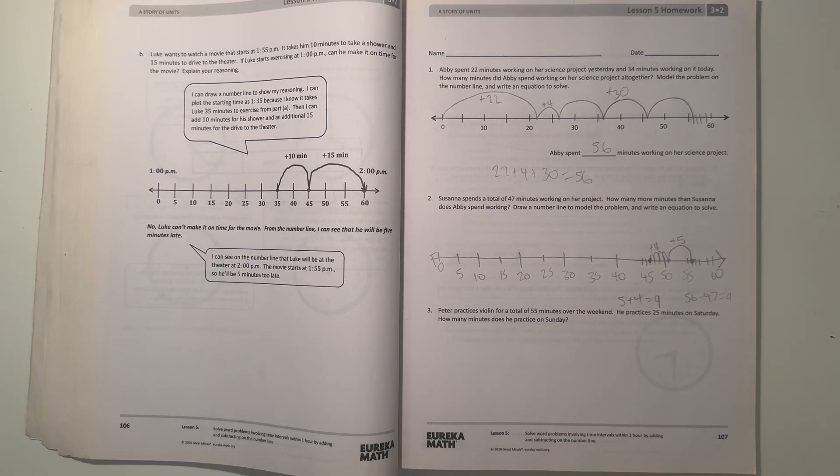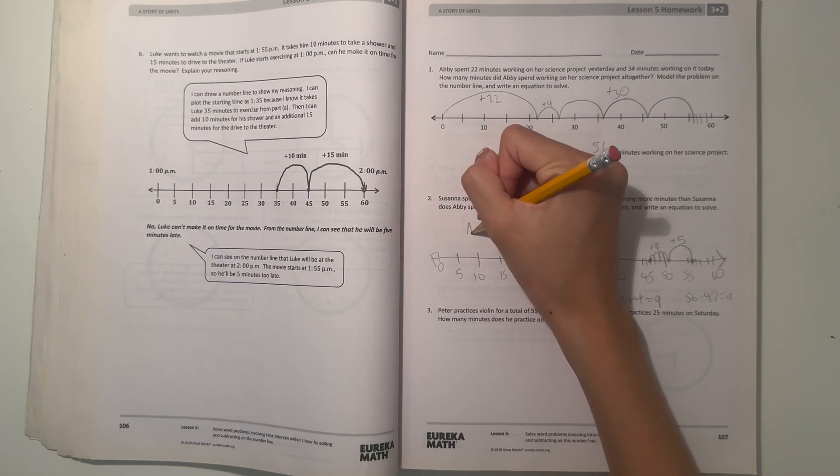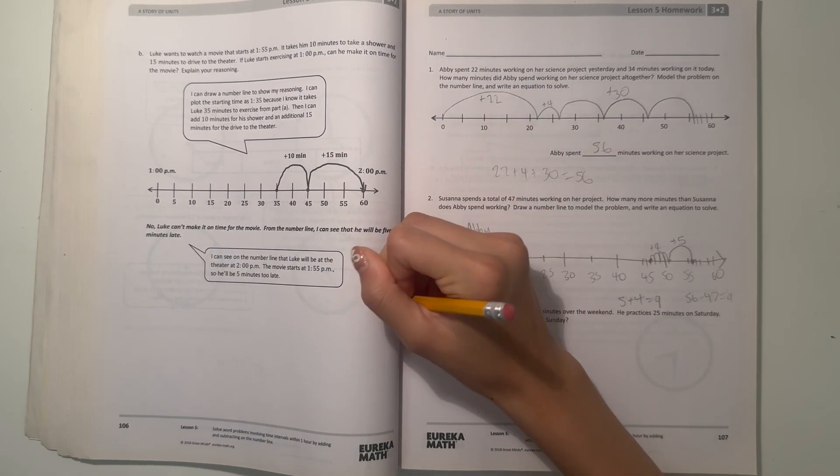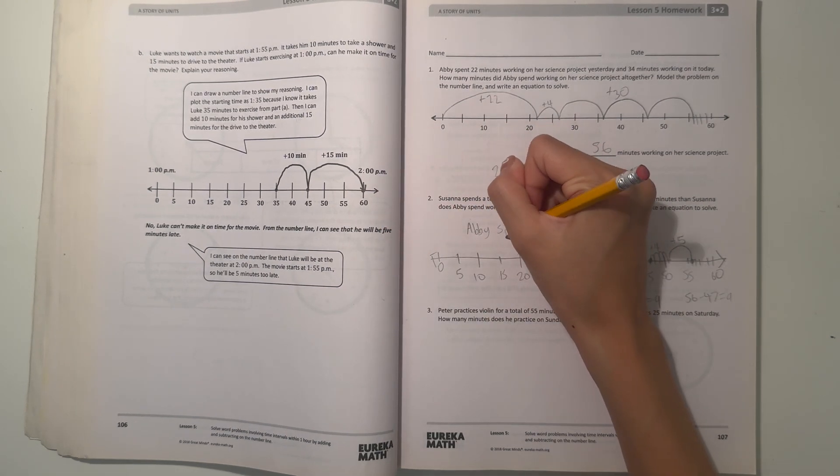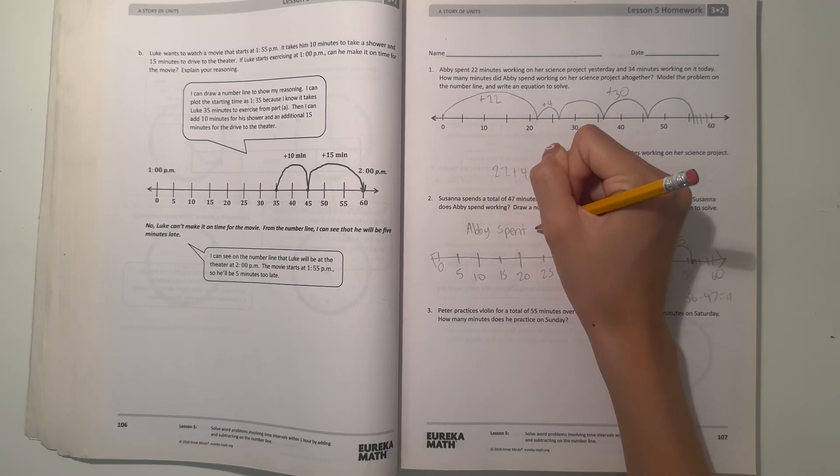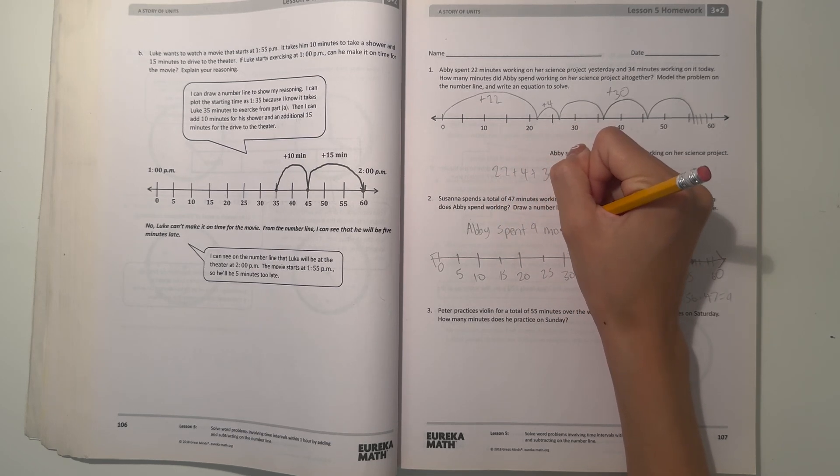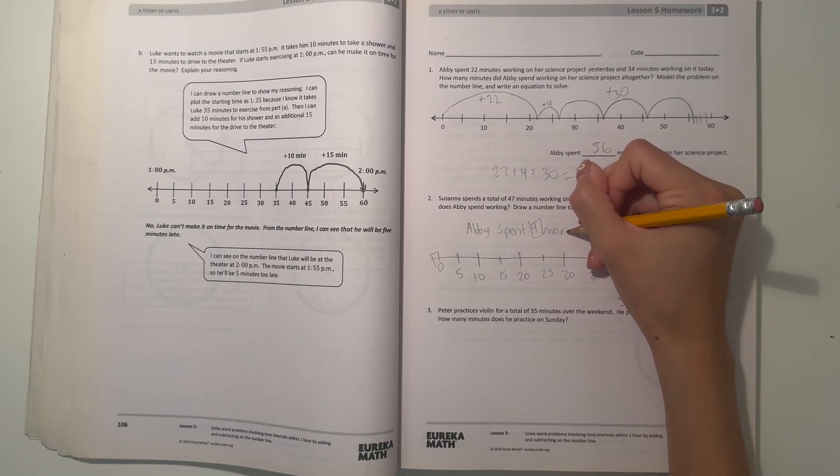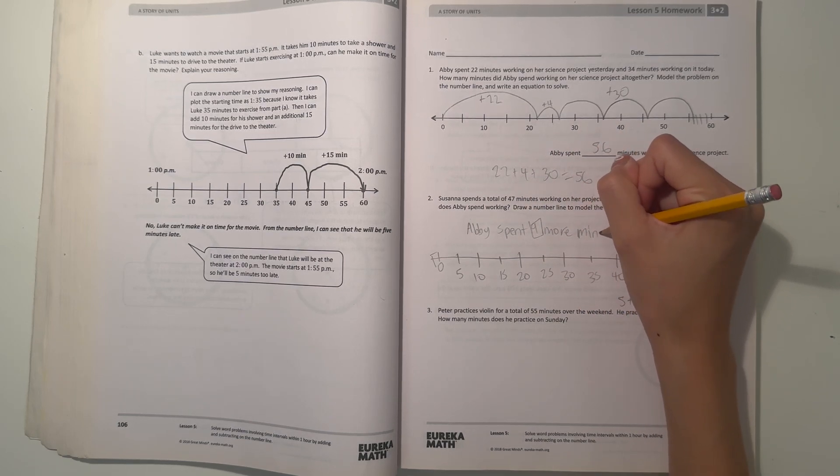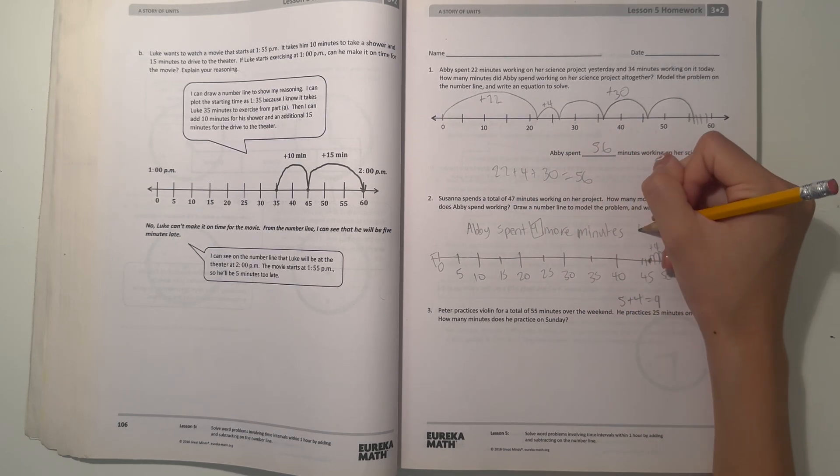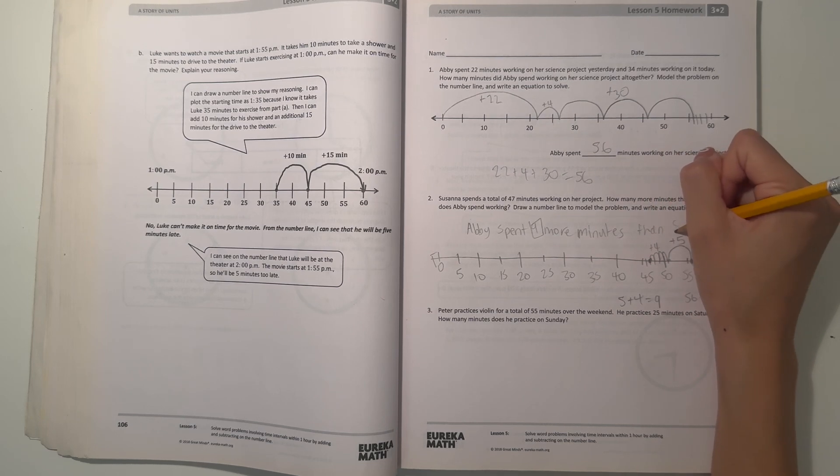So Susanna and Abby. So Abby can write a sentence. Abby spent nine more minutes than Susanna.